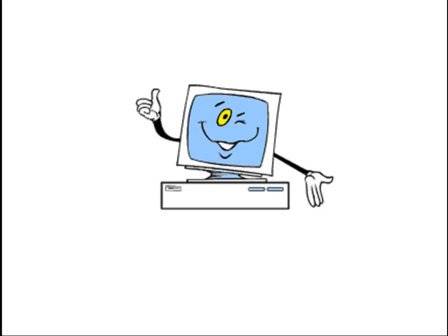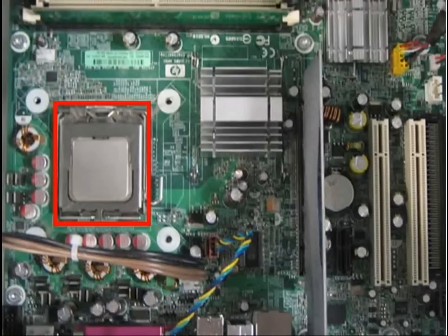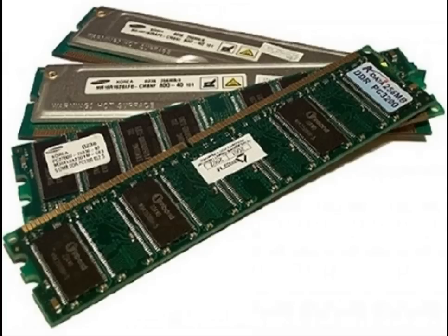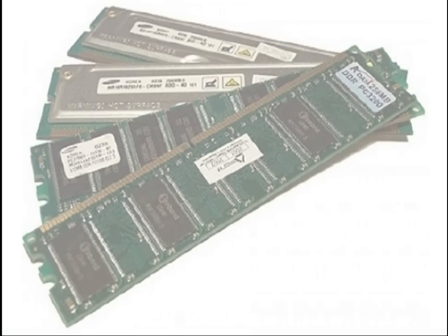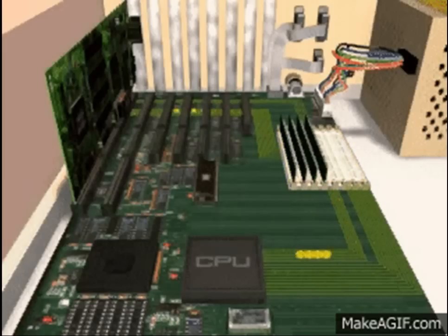A computer system is made up of three major components: the central processing unit (CPU) that processes data, memory units that host data for processing, and the input and output unit used by the user to communicate with the computer. But how do all these different components communicate with each other? They use a special electronic communication system called a bus.